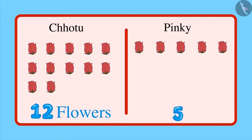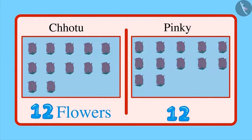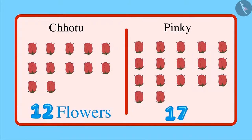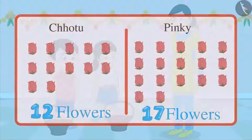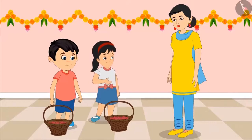That means Chotu has brought 12 flowers. Now let's see how many flowers Pinky has brought. 1, 2, 3, 4, 5, 6, 7, 8, 9, 10, 11 and 12 — that is equal to the number of flowers Chotu has brought. But there are 13, 14, 15, 16 and 17 flowers.